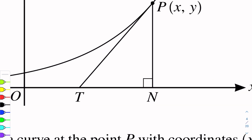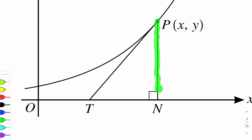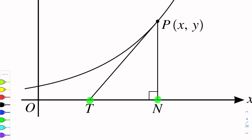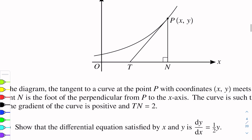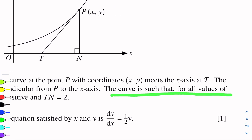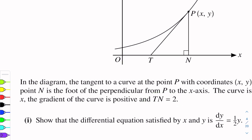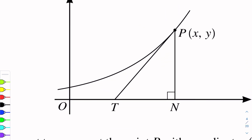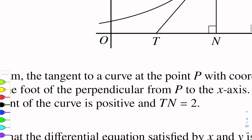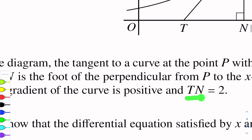Now we have an equation. PN, T forms a right-angle triangle. N and T lie on the x-axis. P lies on the curve. The curve is such that for all values of x, the gradient of the curve is positive. The gradient of the curve is positive and TN is equal to 2.